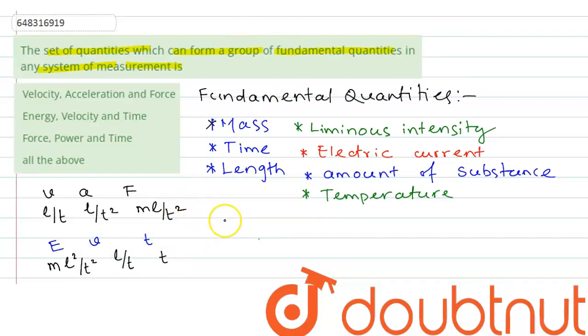For the third combination we have force F, power P, then we have time T. So for force we know the formula is F = m L divided by T squared.